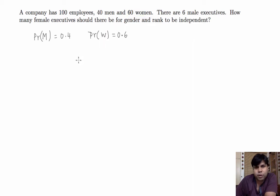We know that there are six male executives, so probability of male intersection executive is 0.06. We want to find the probability of female executive if gender and rank are independent.